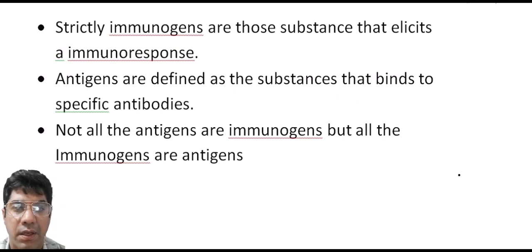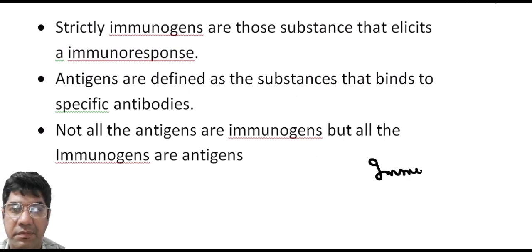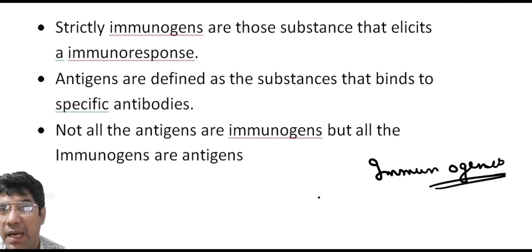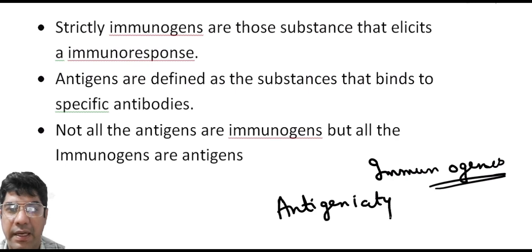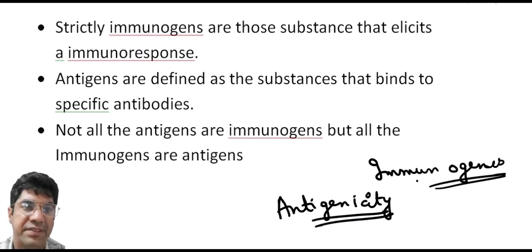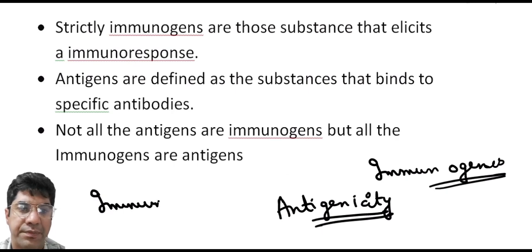Immunogens are a subset of antigens that can induce a detectable immune response. Antigenicity refers to the ability to interact with immune receptors, whereas immunogenicity is the ability to provoke an immune response.